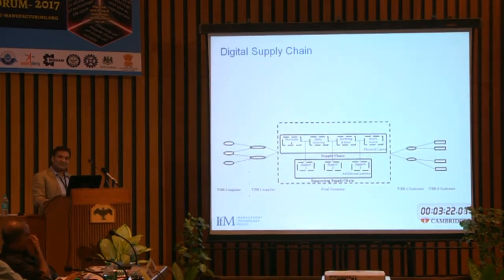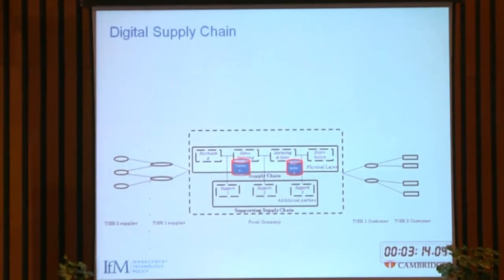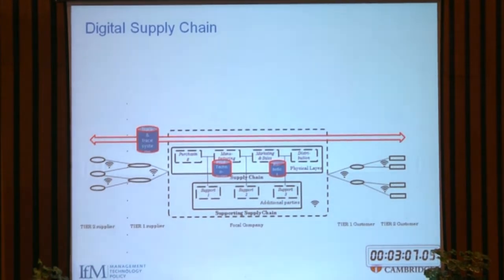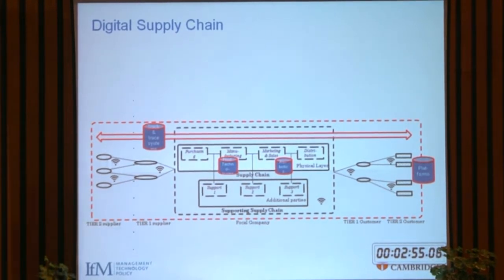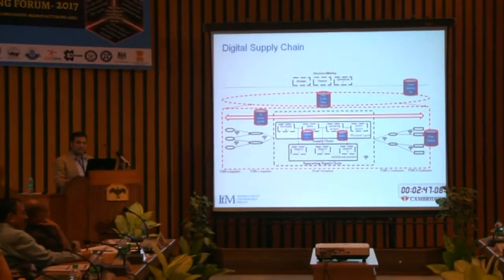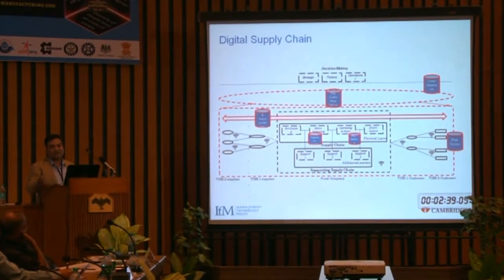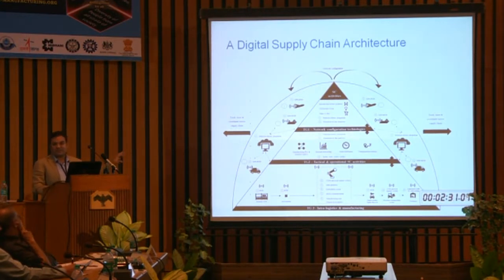In digital supply chain, looking at where these particular technologies are being used: at the manufacturing level we see production technologies like 3D printing and robotics. Across the supply chain, there are trace-and-track technologies. Linking all these things is a platform that integrates all the information together — very similar to what Professor Tiwari was presenting. On the top level, there is big data analytics and user interface technologies. All these digital technologies help companies make strategic, tactical, and operational decisions — making things smoother.